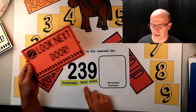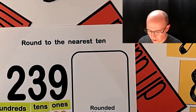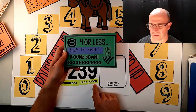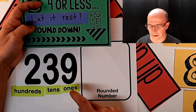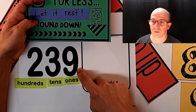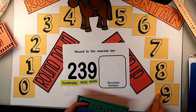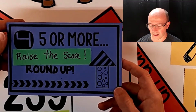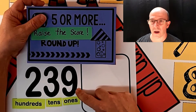Step number two says look next door. Remember that we look to the right of this, and I'm going to go over here to the ones place. Step three says, is it four or less? Let it rest and round down. Well, a nine is not four or less — it's more than four. And if we remember the round the mountain chart, number nine is way over on the round up side. That's also what step four says: is this number five or more? Raise the score and round up.